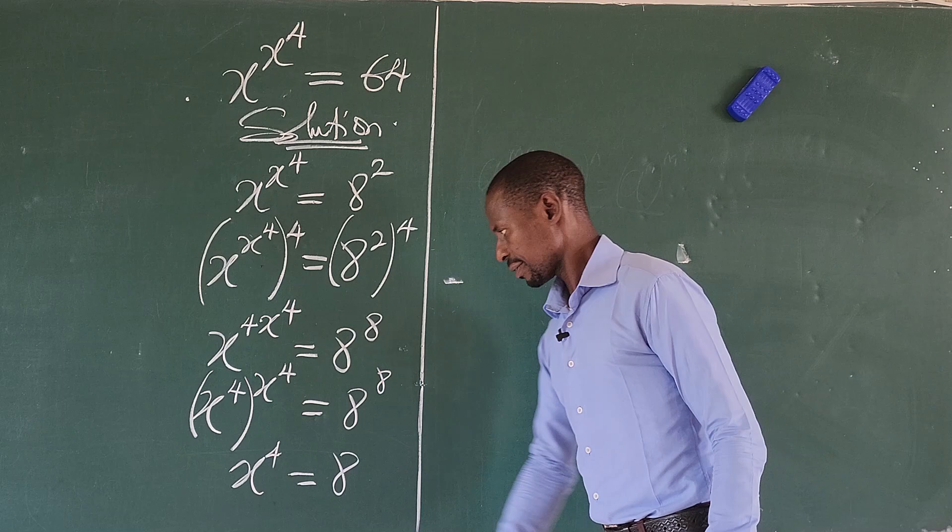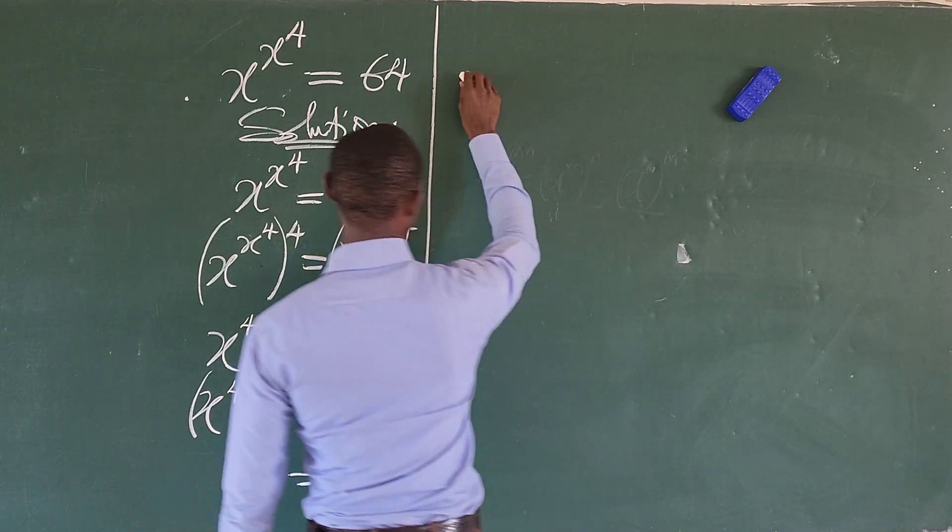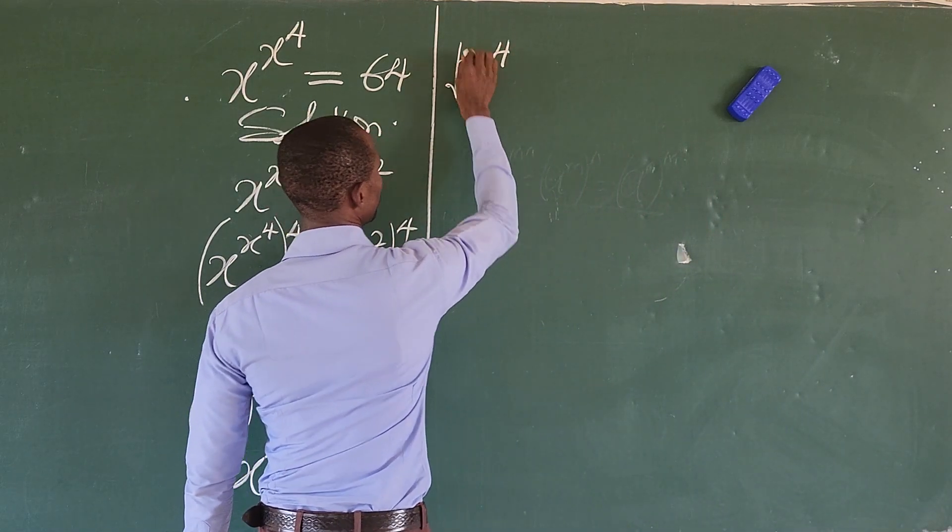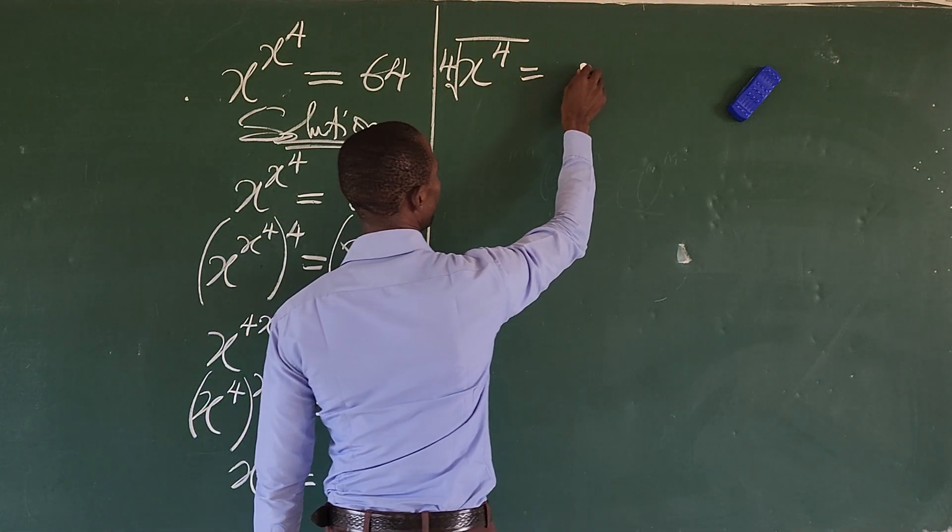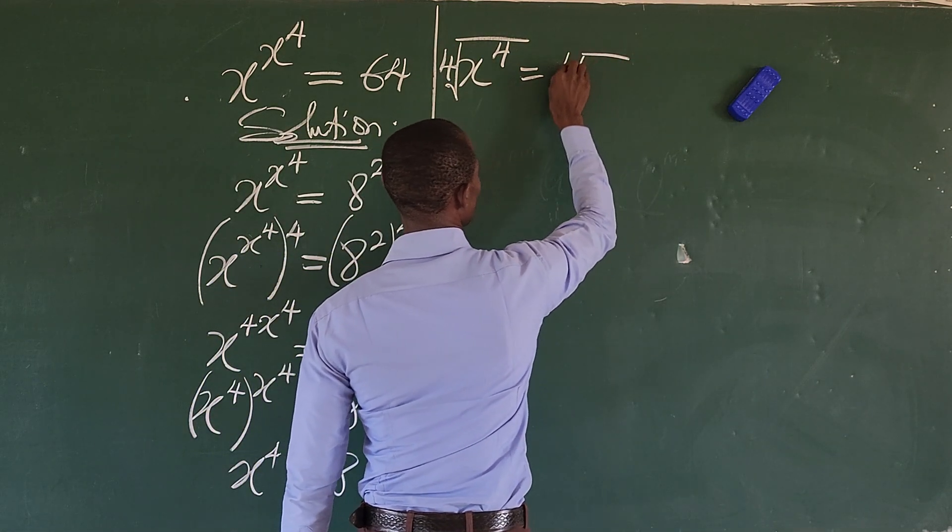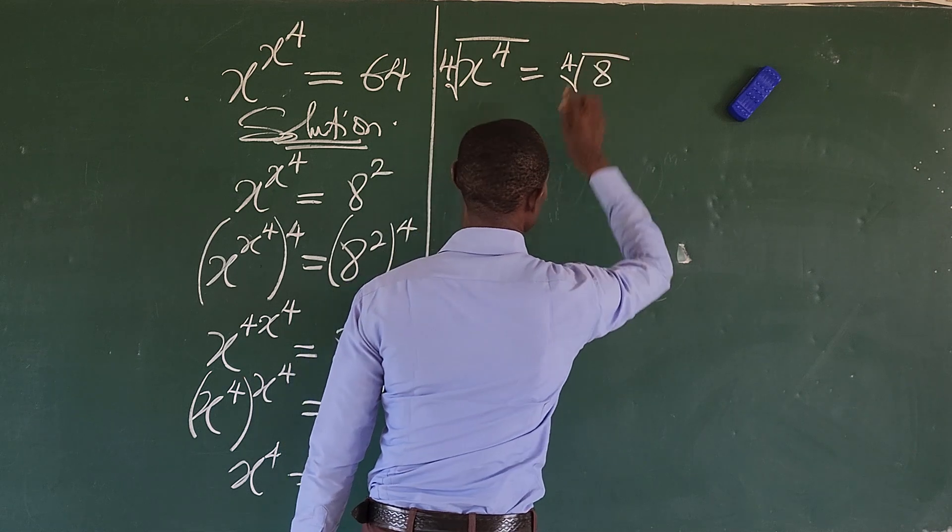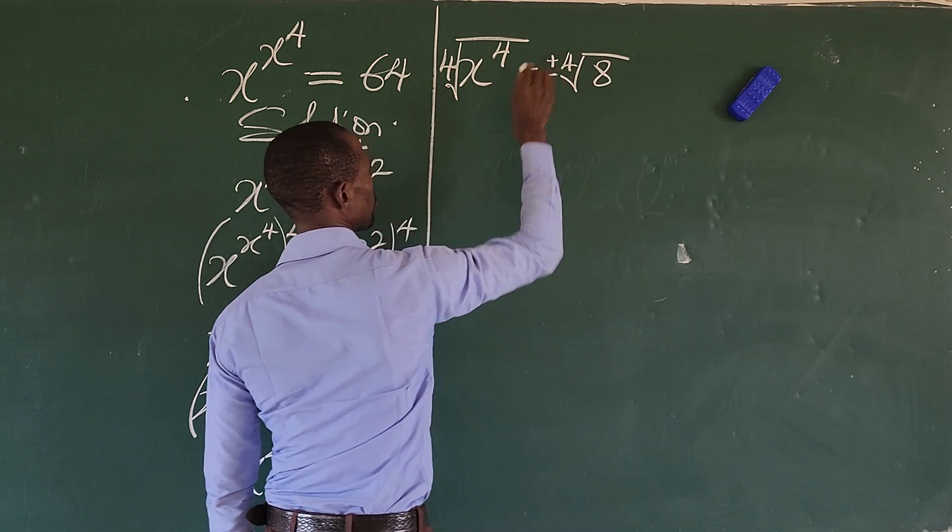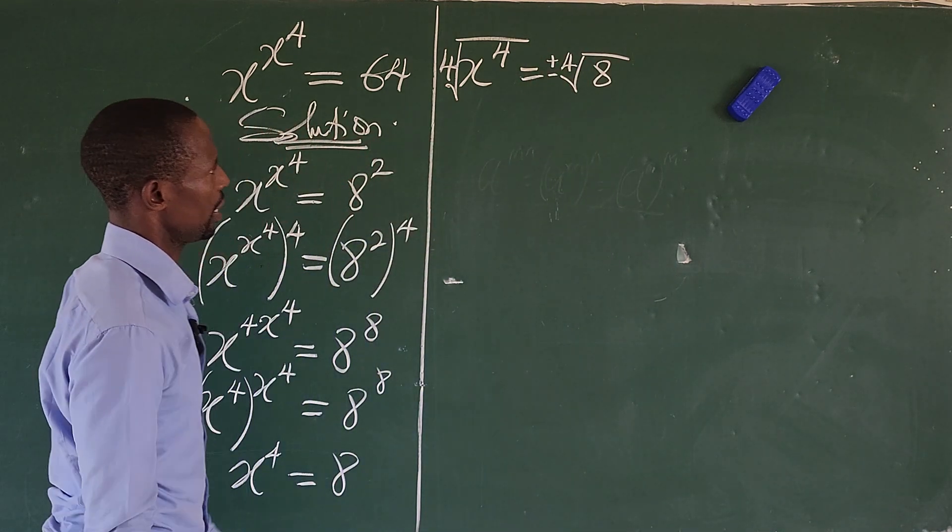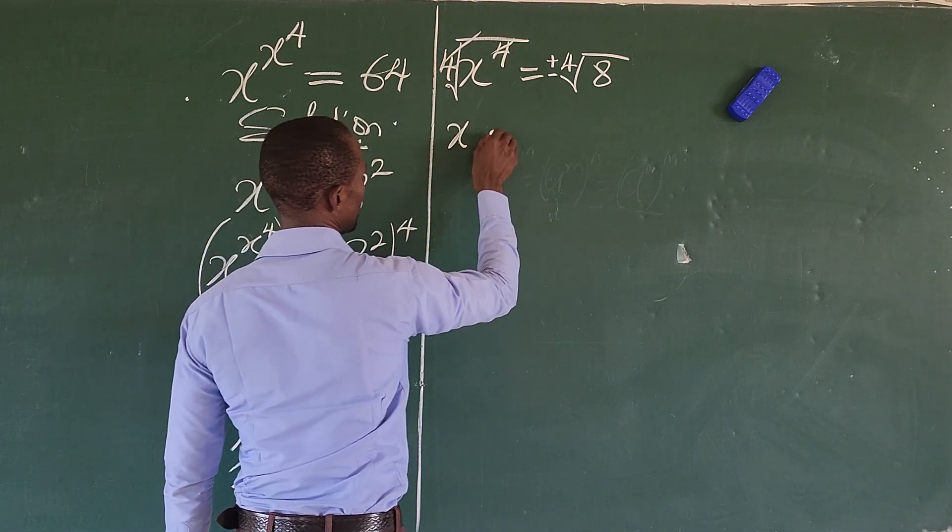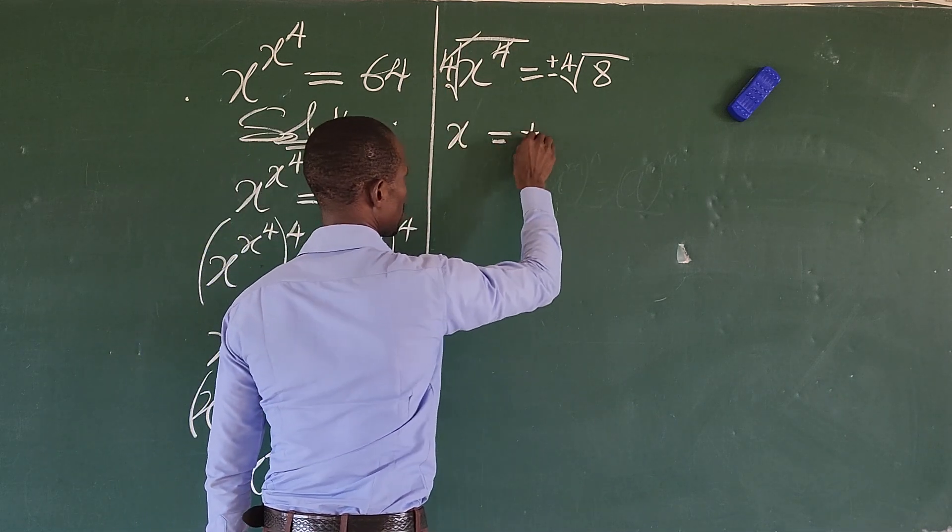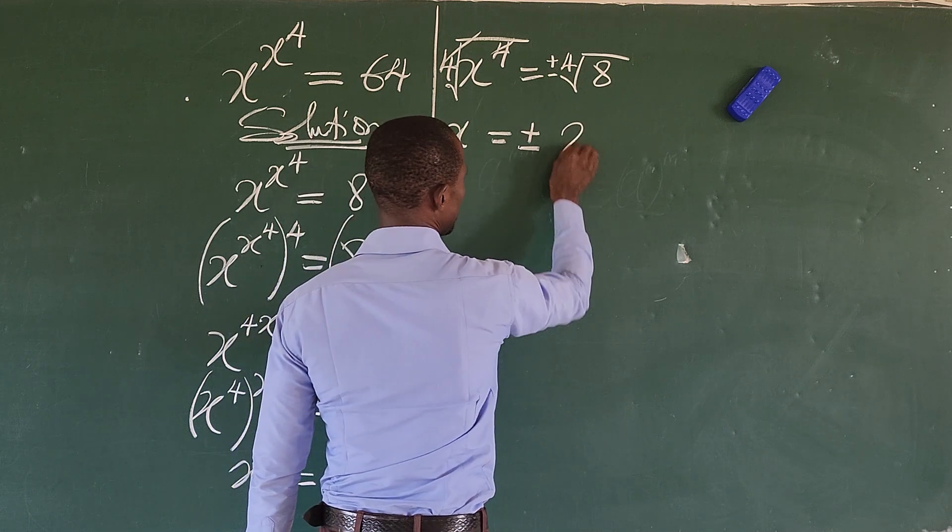Taking the fourth root of both sides, we're going to have x to the power of 4 is equal to we have our fourth root of our 8. Also at this point we introduce our plus minus here.